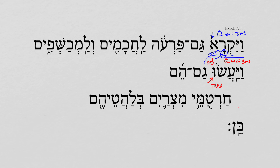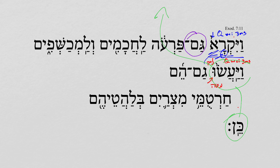So, let's notice two things. Again, the verb: 'they did thus.' It's not spelled out what they did — it's just implied they did the same thing that Aaron did. But what we have is the use of 'gom' twice. So it's like, even Pharaoh, and even his wizards, they could do the same thing.